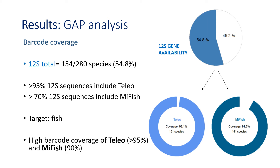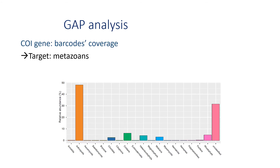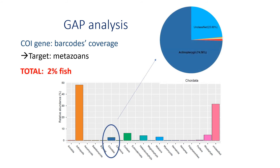In this case, both Teleo and MiFish have fish as targets. Why is this important? These graphs are part of an empirical analysis that my research team is currently working on. We can see that when using COI gene barcodes, which are not fish-specific, the highest proportion of detections corresponds to Arthropoda, with only a small fraction corresponding to Chordata. Within Chordata, most detections are for Actinopterygii, but taken altogether, fish represent only 2% of detections.